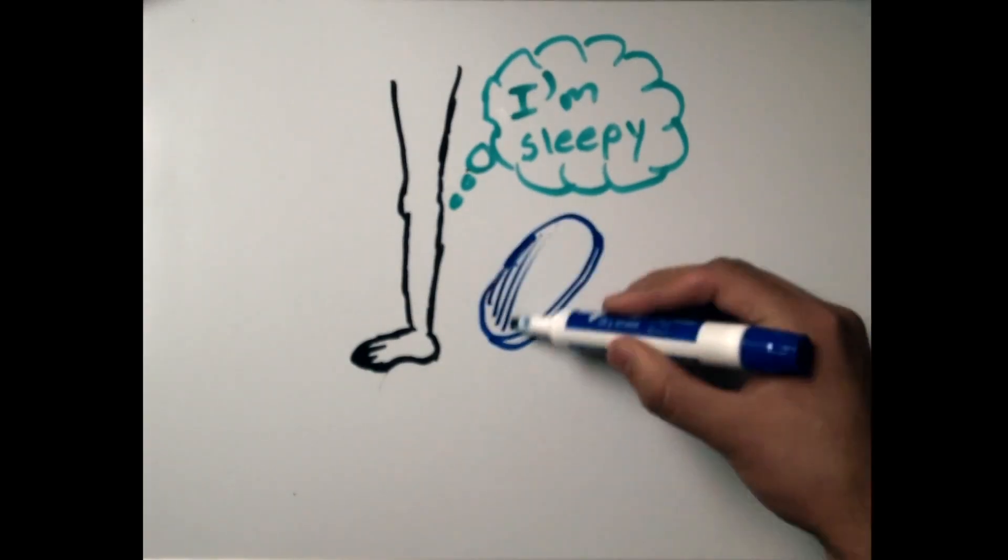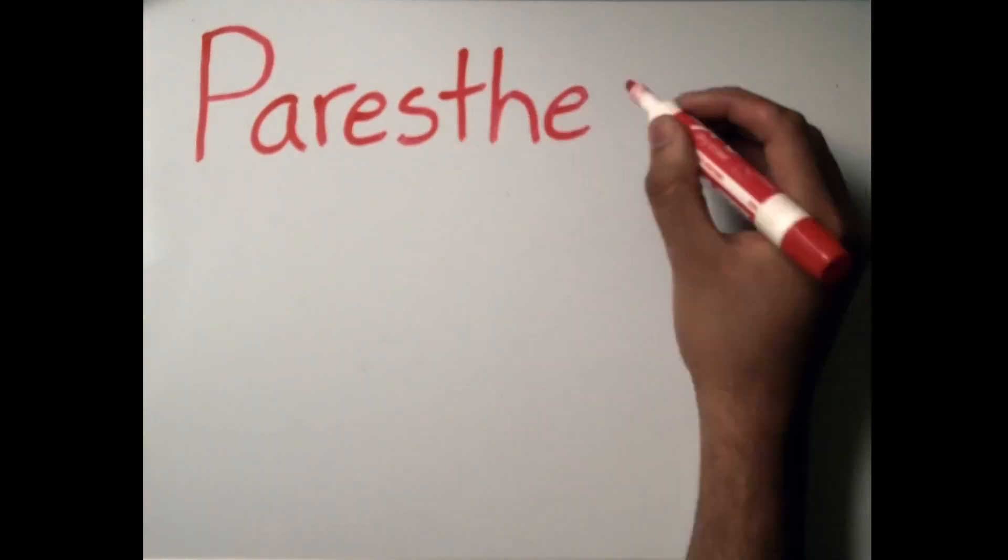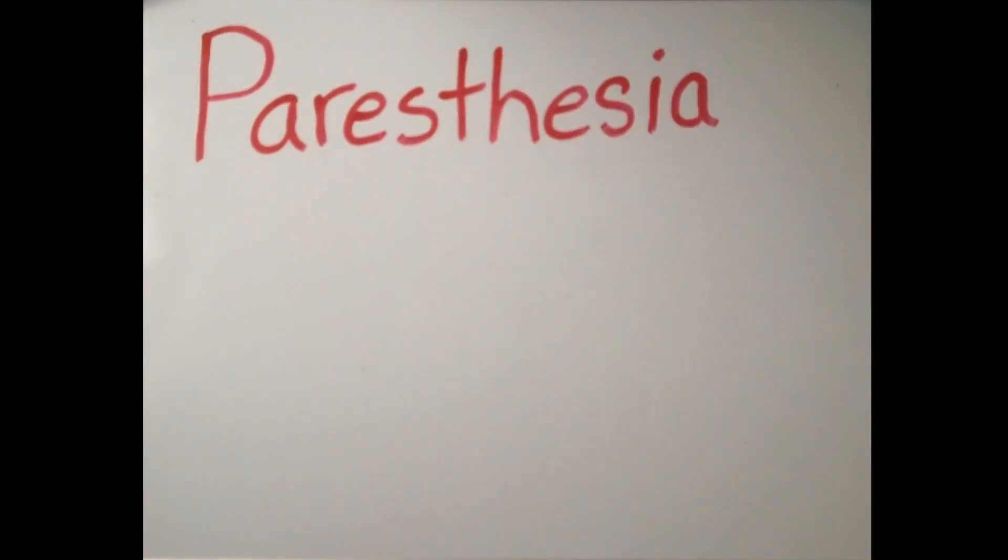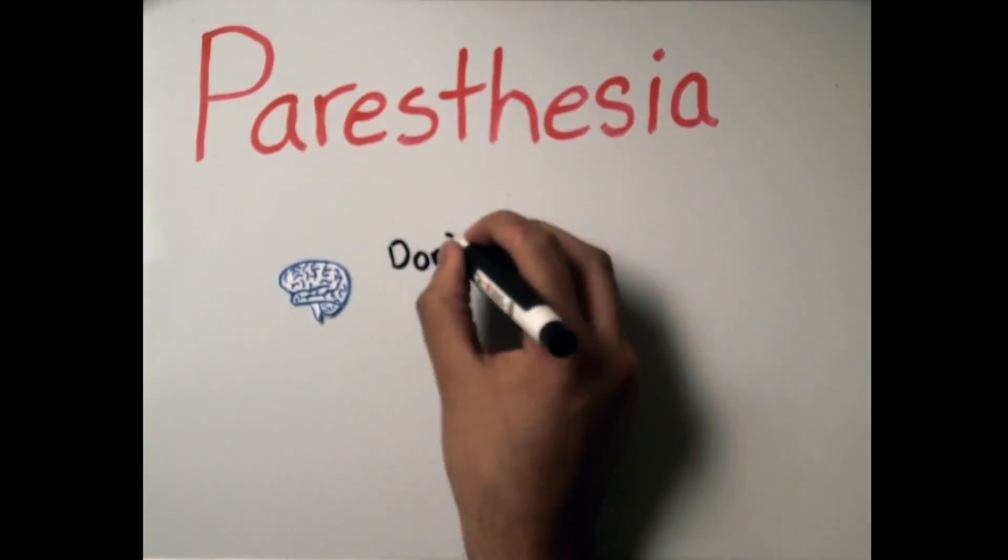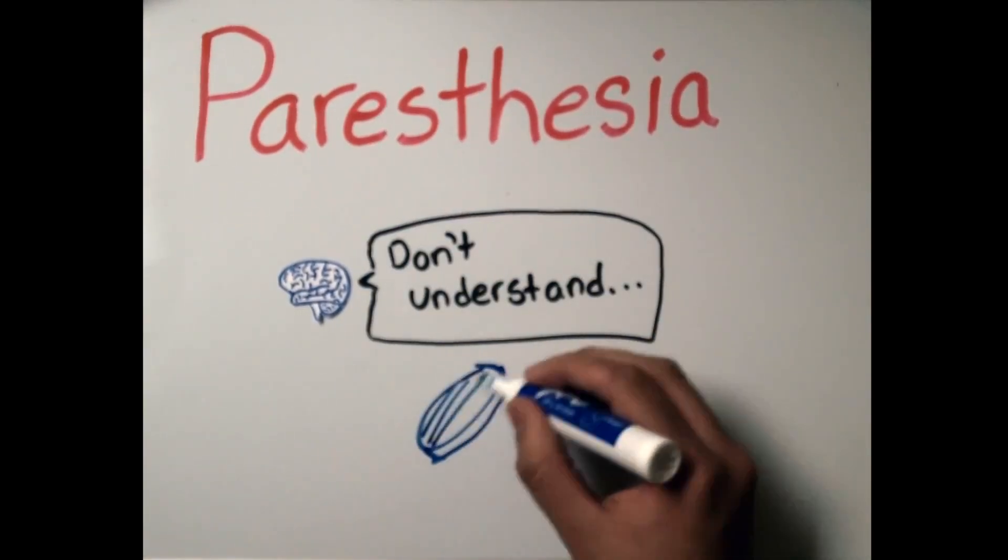Now we know why the limb is less responsive, but what about the tingly pins and needles we feel? This sensation is called paresthesia. The jumbled messages being sent to the brain cause this feeling. It is the body's way of telling you that you should move that part of your body to relieve the pressure.